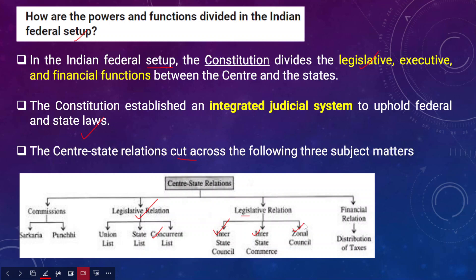Because of the conflictual nature of center-state relations, different governments over time have appointed different committees to examine center-state relations. The Sarkaria Commission and the Poonchi Commission have come up with important recommendations for improving center-state relations. Apart from these two, we also have the National Commission to Review Working of the Constitution, and the Rajamannar Commission, which is also a very important commission.